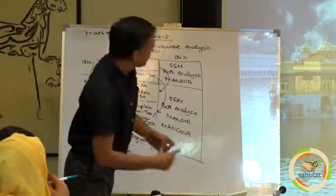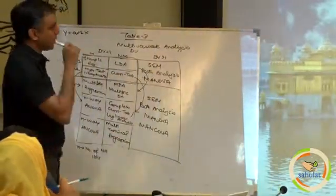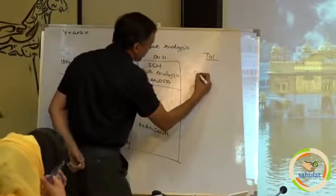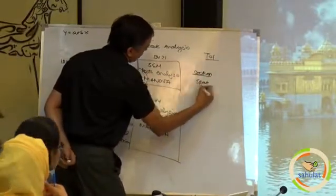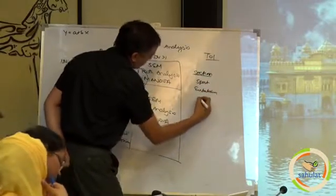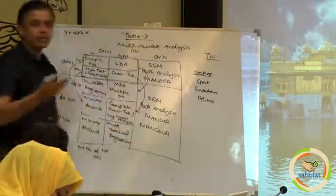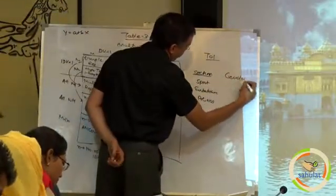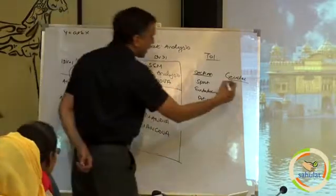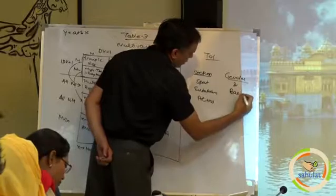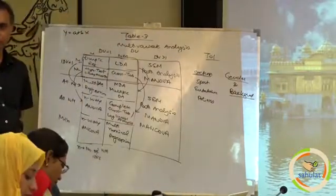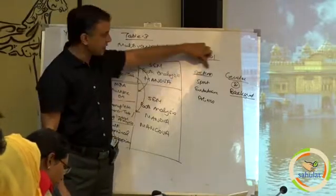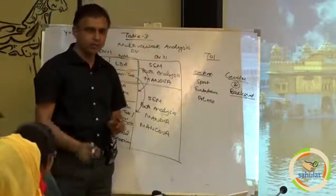Let us take certain case studies. The Times of India is concerned with which sections people are reading. The sections are sports, entertainment, and politics, because ultimately they wish to place certain ads. So they are looking at whether it depends on gender — males are looking for this and that — and at the same time it depends on background also, meaning urban or rural.